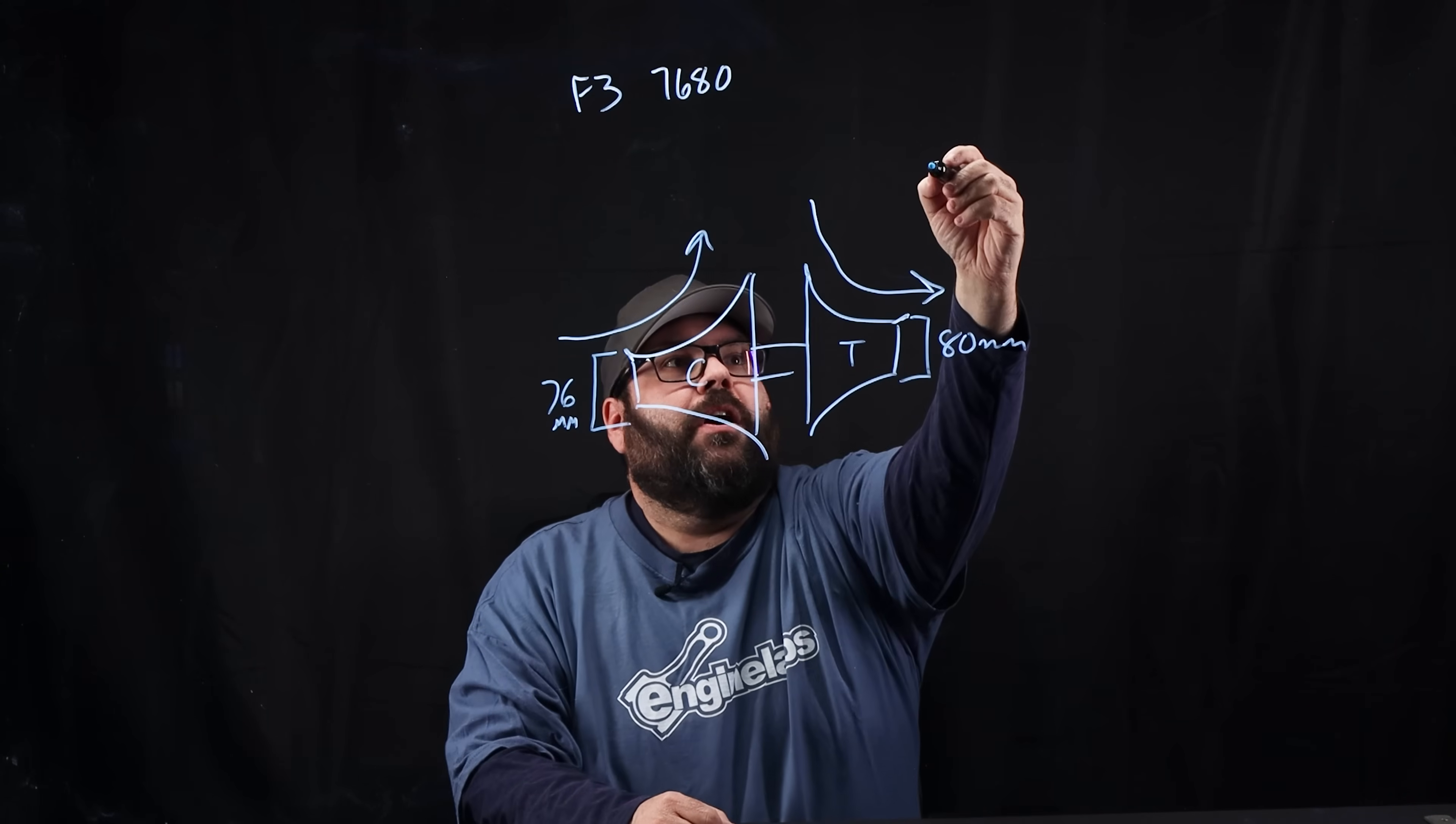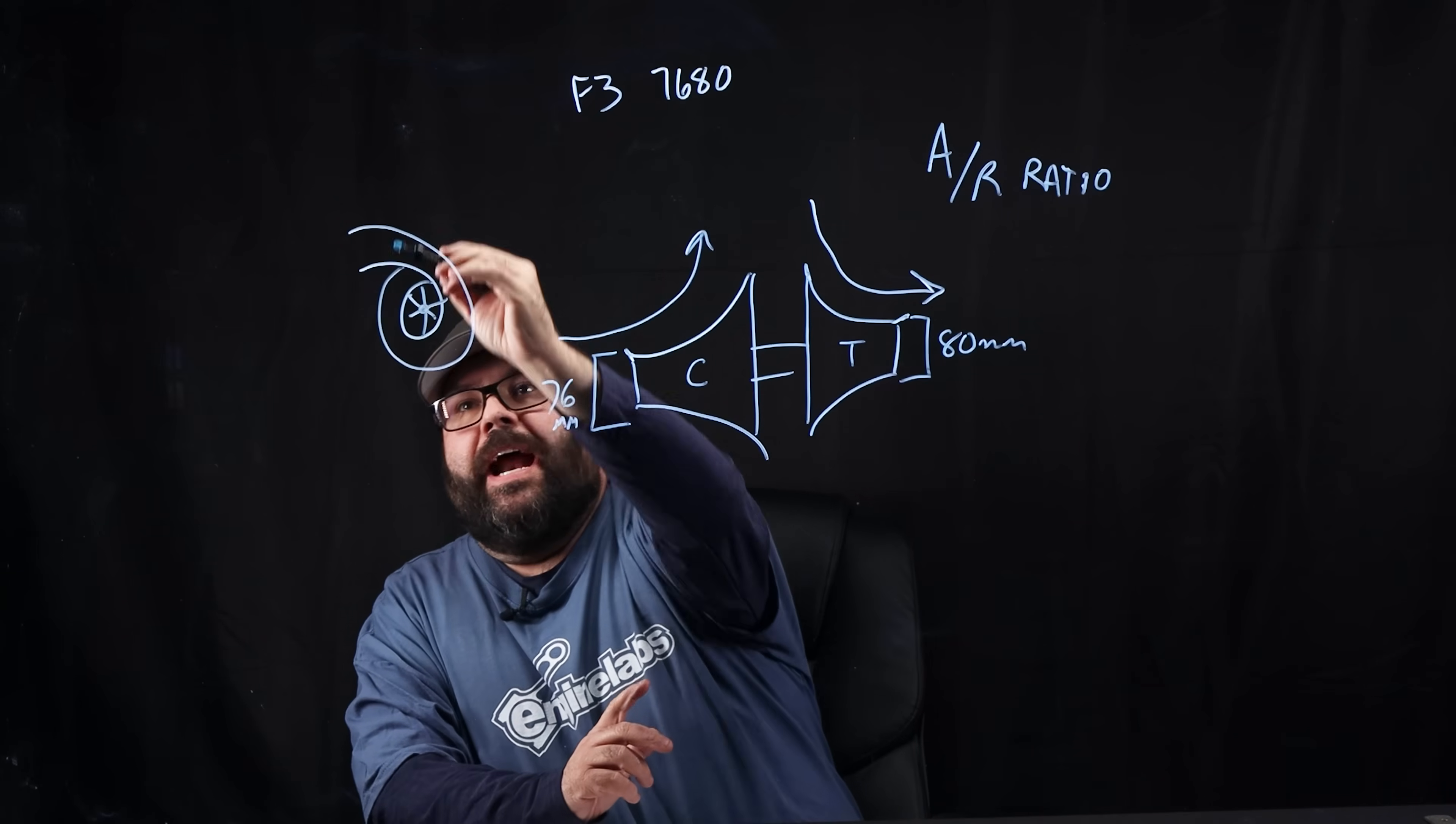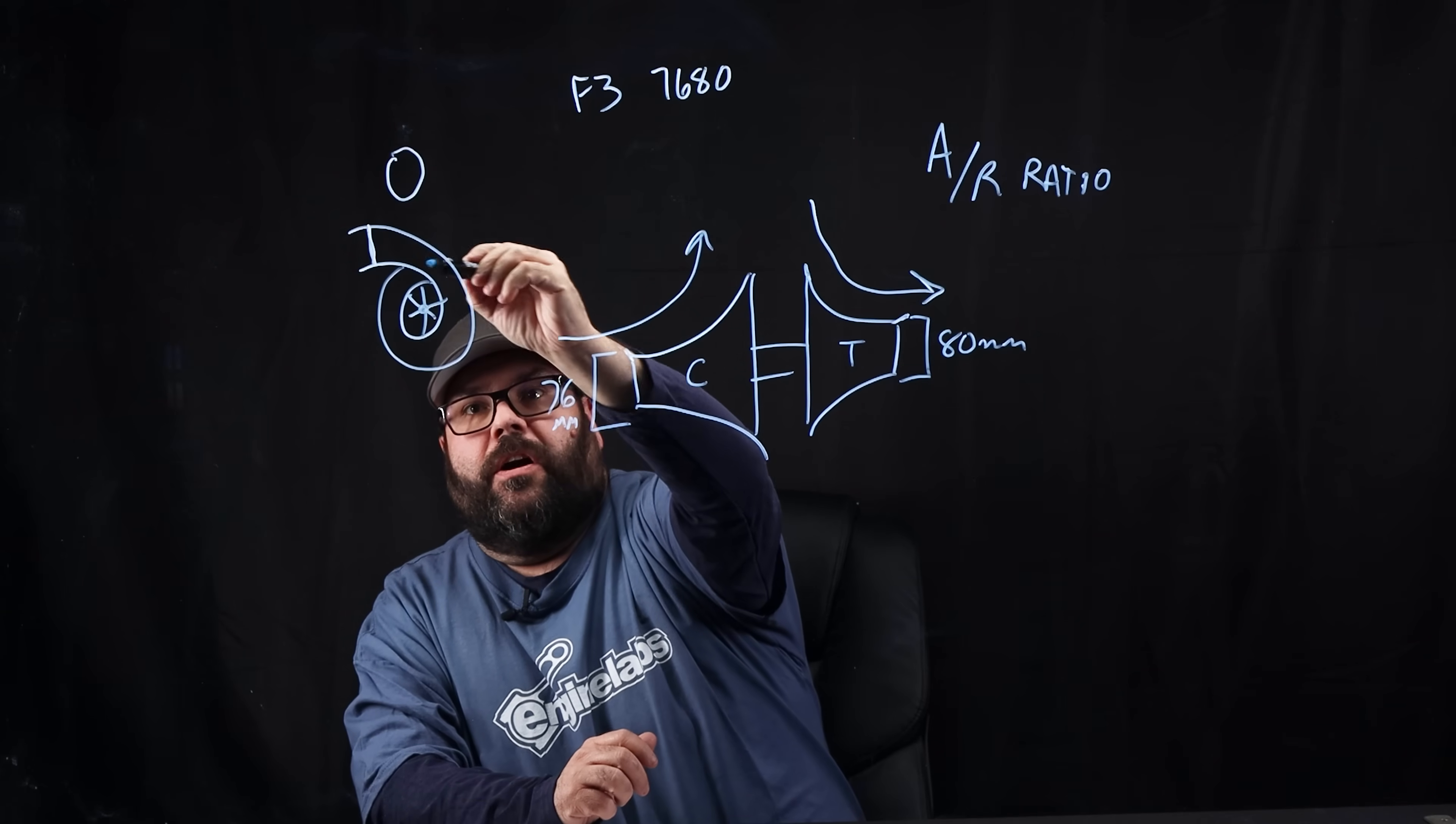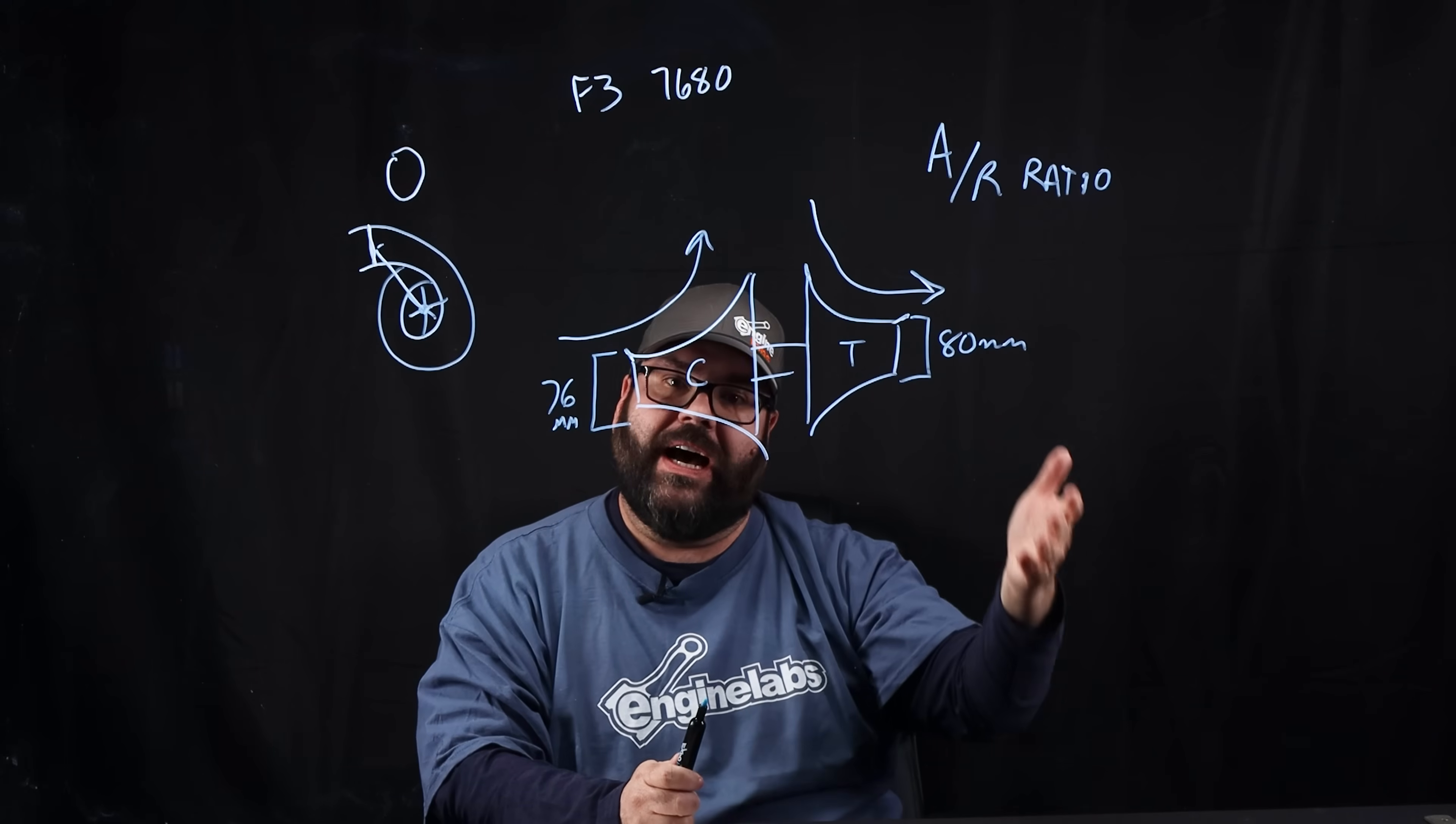Now, why does that make a difference? Well, because of something called AR ratio. So what AR ratio is, let me try to draw a turbo without embarrassing myself too badly. The area is a point right at the inlet, about right here, where they measure the area of the compressor housing. And then they take that and divide it by the distance from that measurement of the center of the compressor housing. This is getting really techy. And so then that distance, here to here, will be the second part.